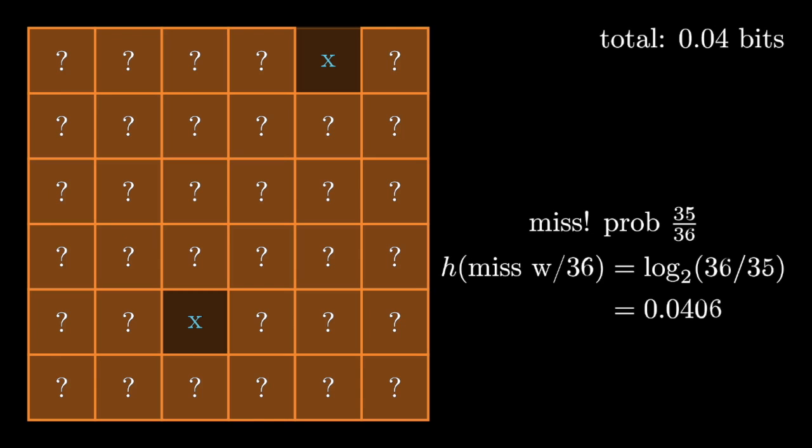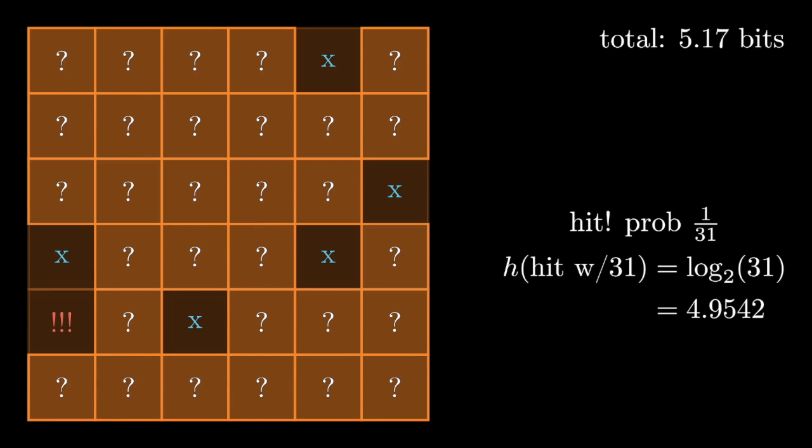Now let's run that again with a different random seed—so a different placement of the submarine and different choices about where to look. And there we found it on our sixth try. We get even more bits this time on the turn where we find the submarine. Note that we still wind up with 5.17 bits total. The location of the submarine has the same information content even if we find it in a different way.